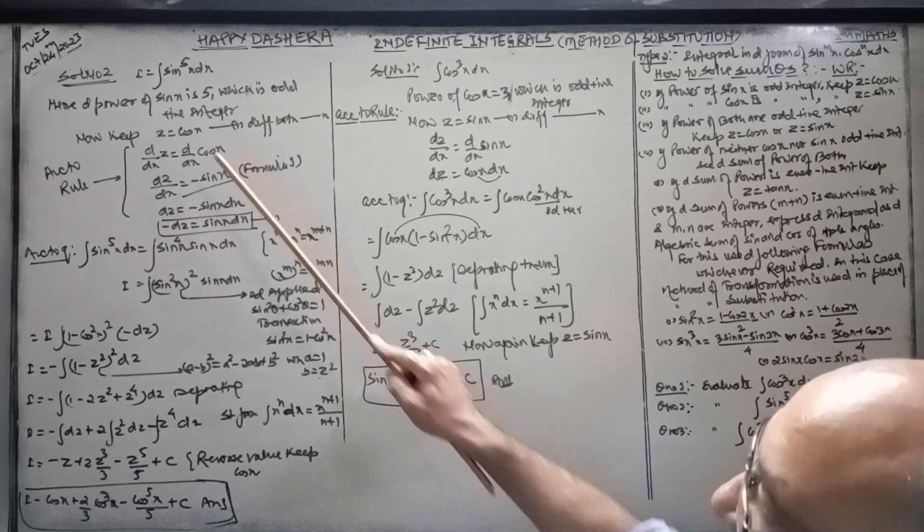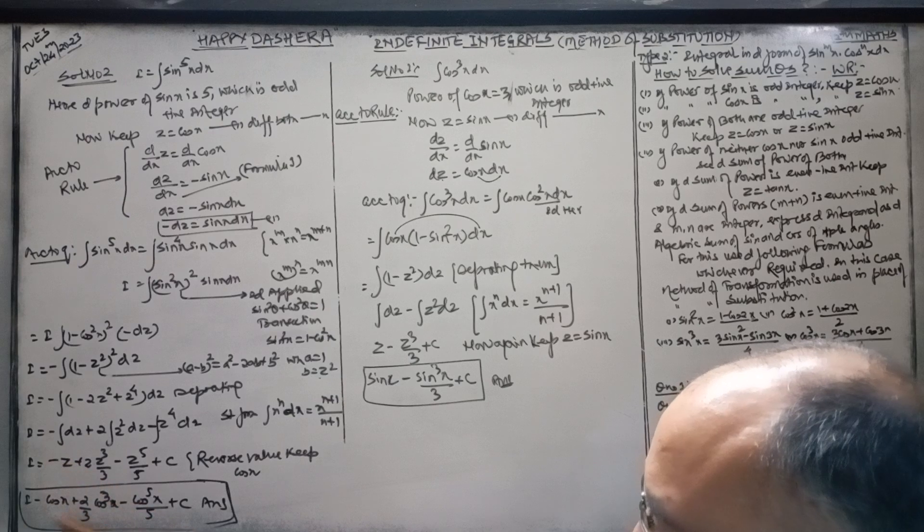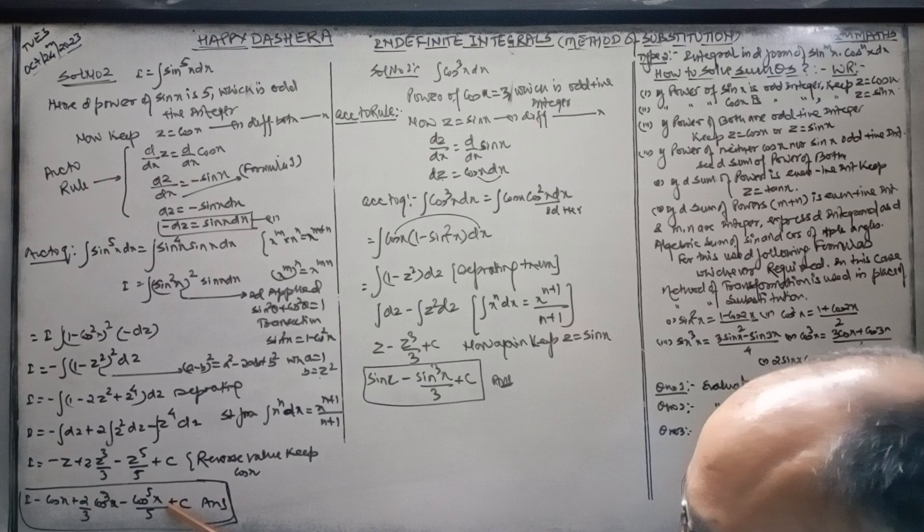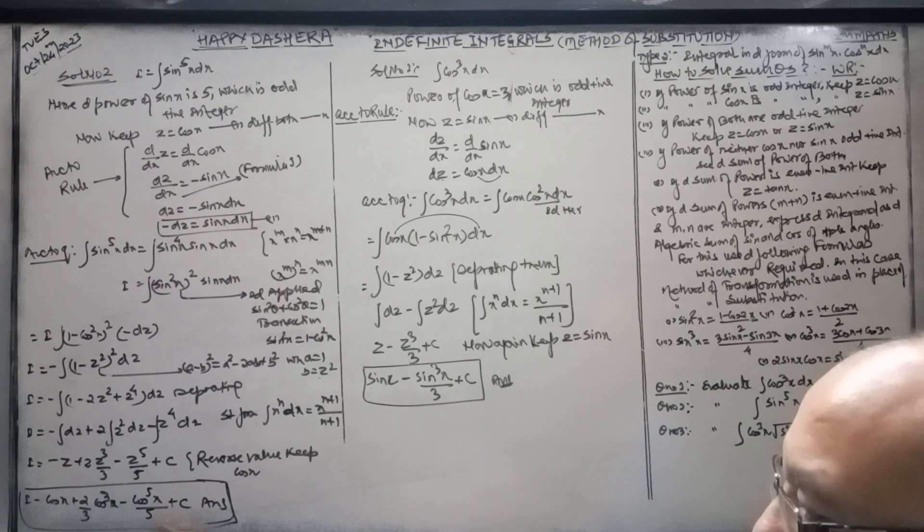In place of z, again you have to keep cos x. Minus cos x plus 2/3 z³ minus z to power 5. So cos to power 5x by 5.